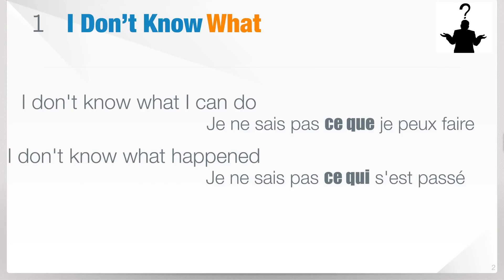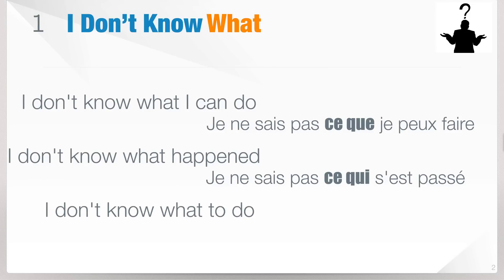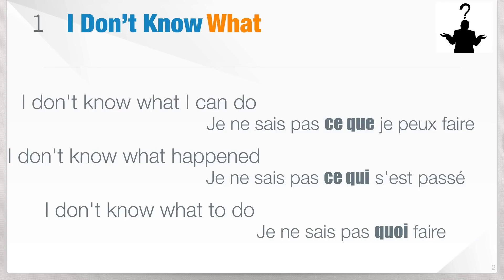There is a lesson about que and qui if you want to understand it better. The third expression is 'I don't know what to do' — with 'to do' in the infinitive form. In French, 'what' is different here: je ne sais pas quoi faire. When you've got an infinitive, you use quoi. So just one word in English — 'what' — but three expressions in French: ce que, ce qui, and quoi.